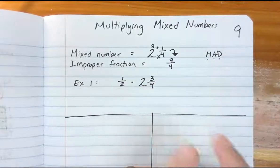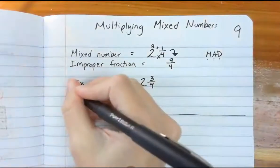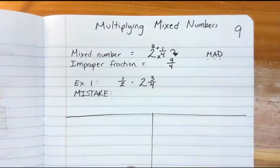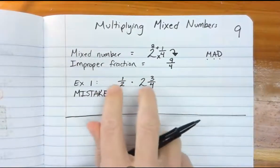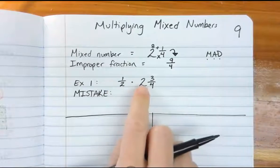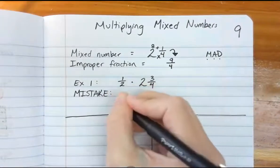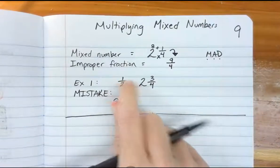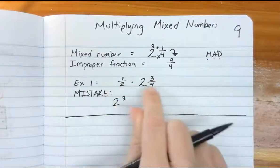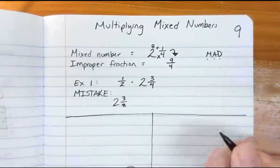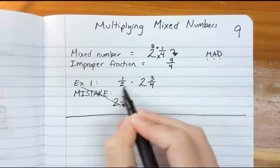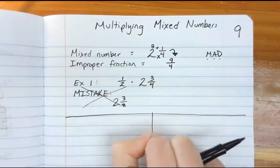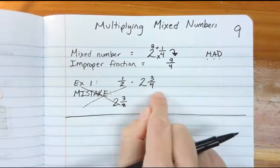Now the most common mistake would be to look at this and say, 'Oh, there's a big two so the whole number must be two,' and then multiply one times three to get three and two times four to get eight, and think you're done. This is a mistake — the most common mistake we make when multiplying mixed numbers by any kind of fraction. We do not simply get to multiply straight across.